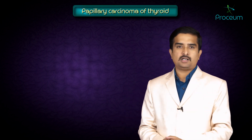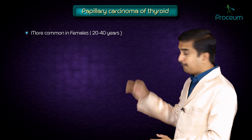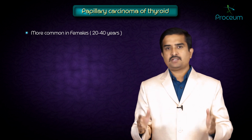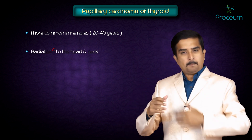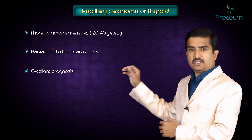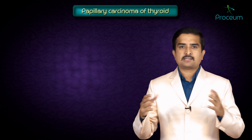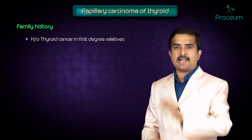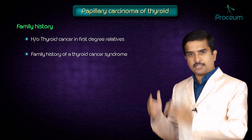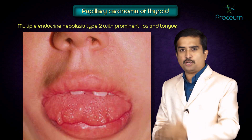Papillary carcinoma of the thyroid is more commonly seen in females between the ages of 20 to 40. It is associated with radiation to the head and neck, particularly during the first two decades of life. It has an excellent prognosis, and the route of spread is lymphatic. A family history of thyroid cancer in first-degree relatives or a thyroid cancer syndrome — such as familial polyposis, Carney complex, or multiple endocrine neoplasia type 2 — increases the risk.